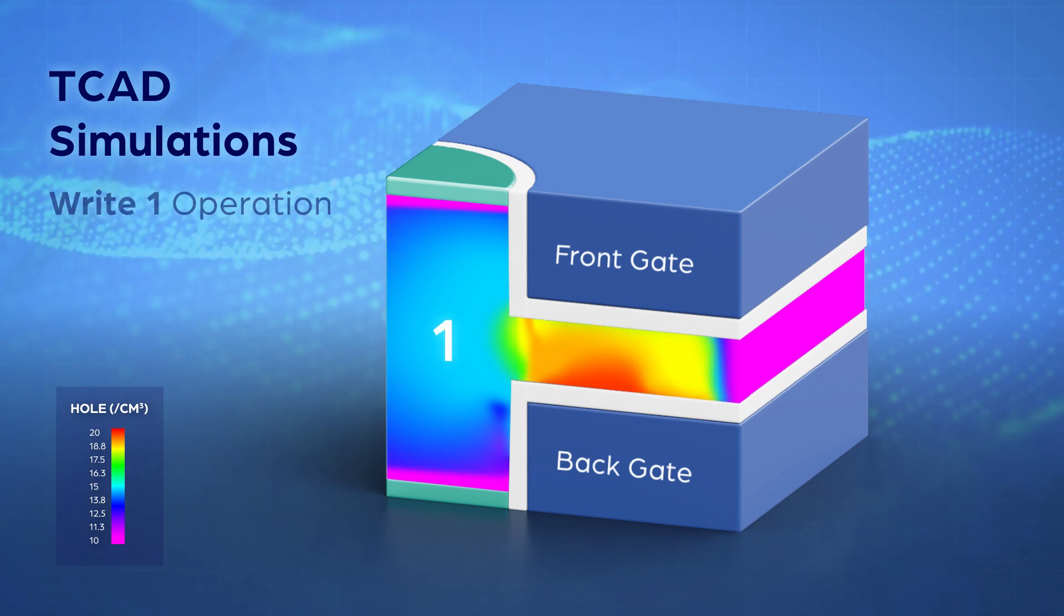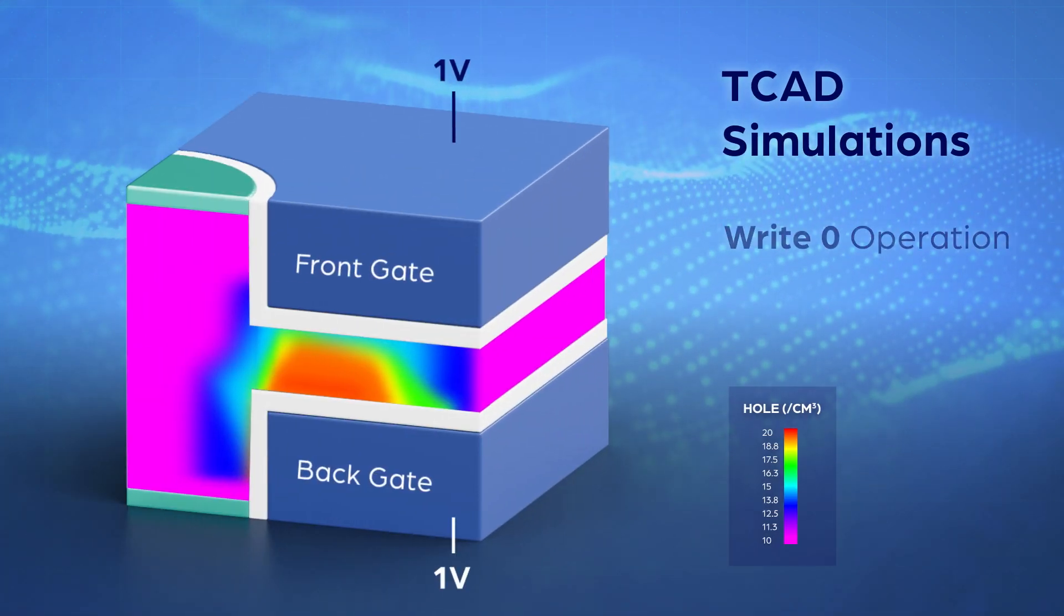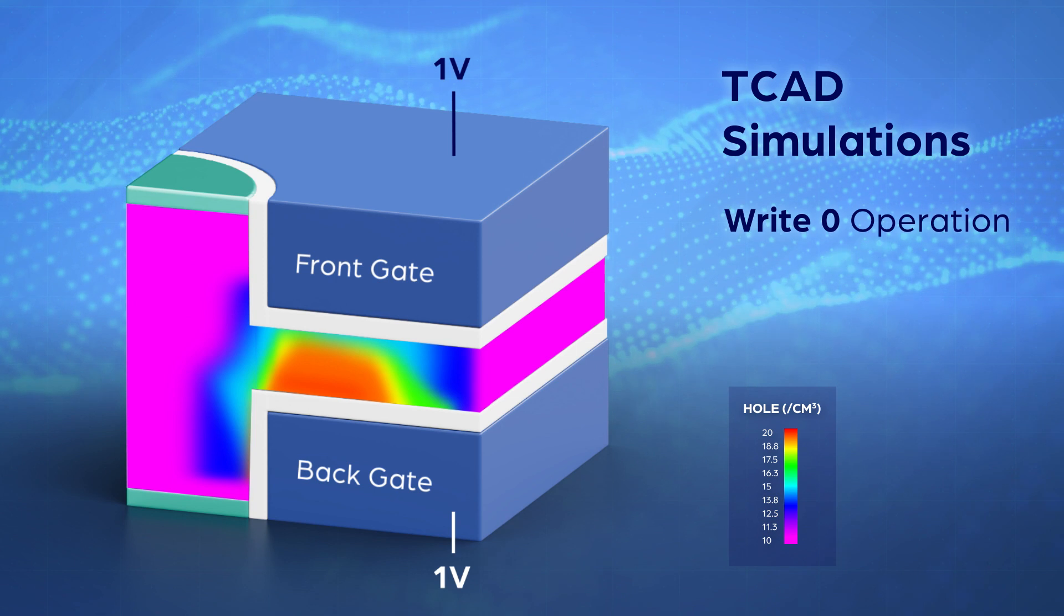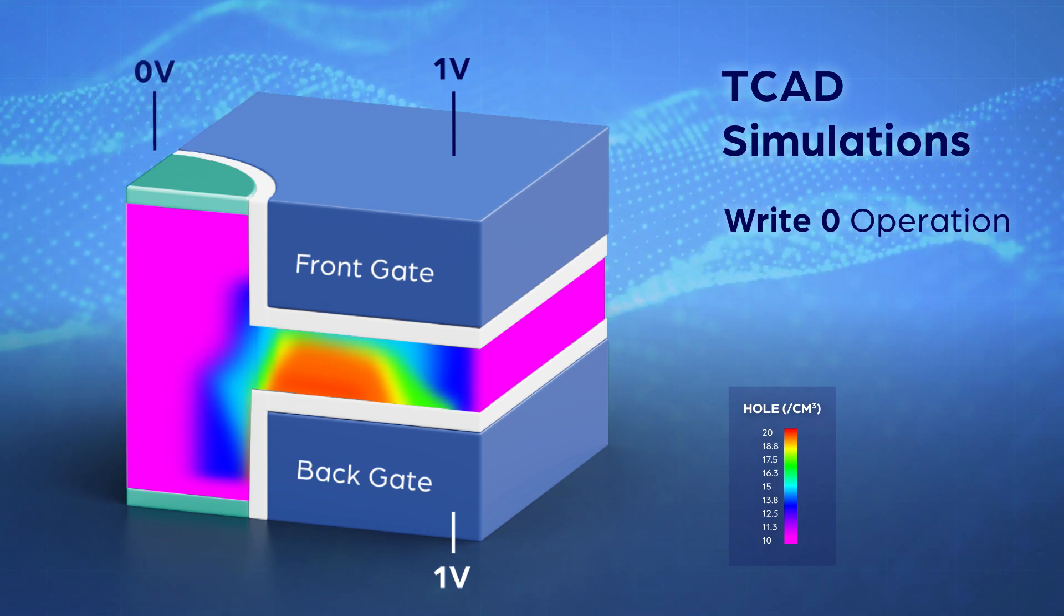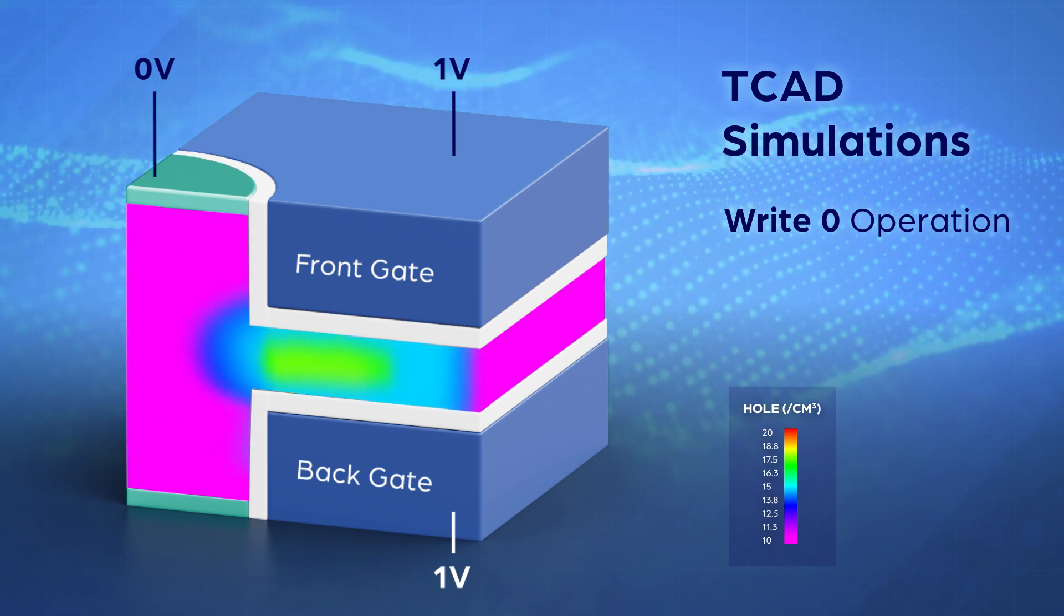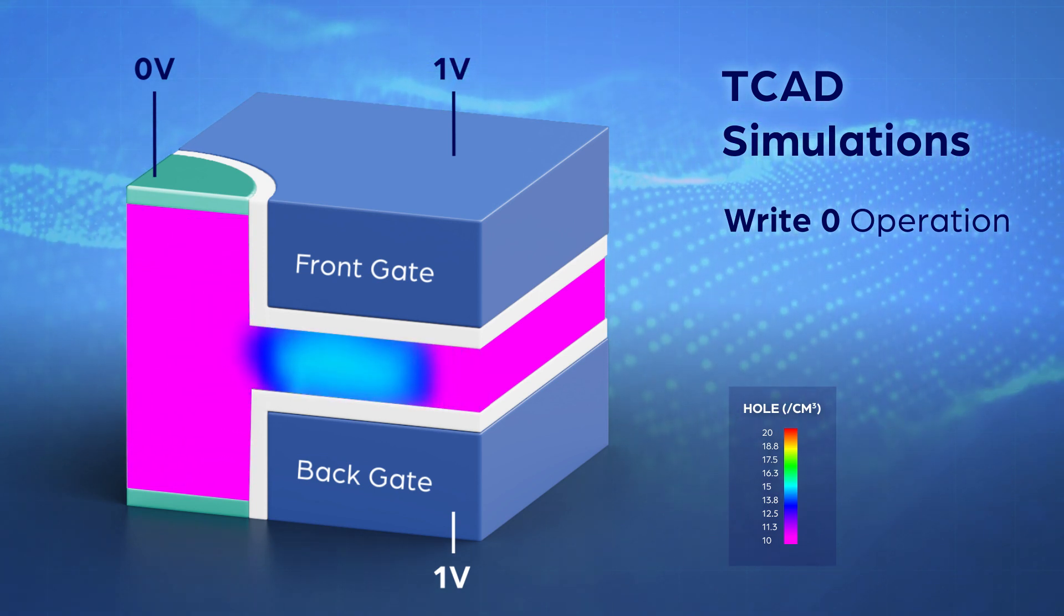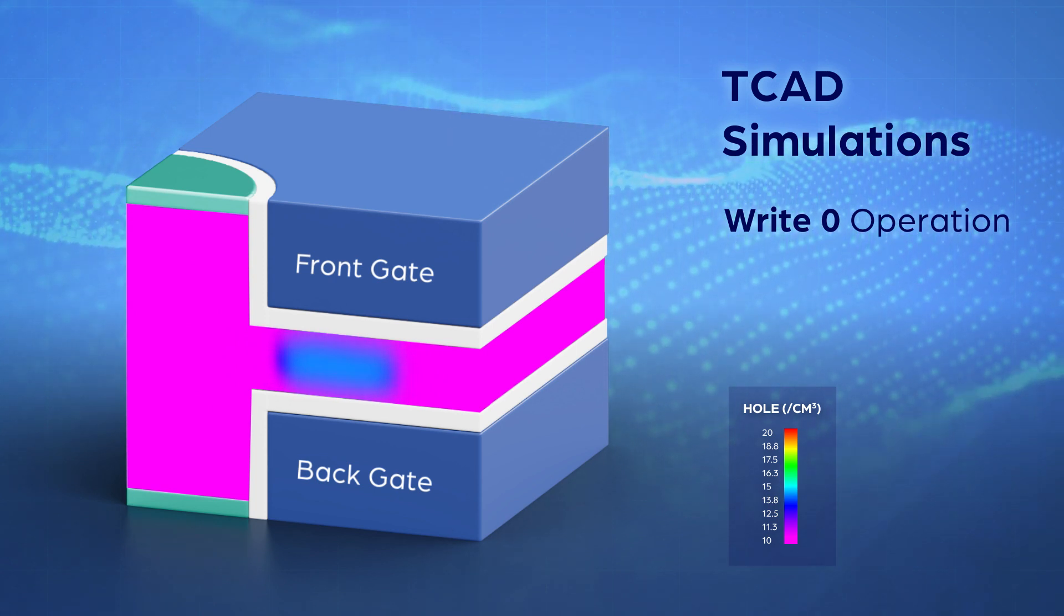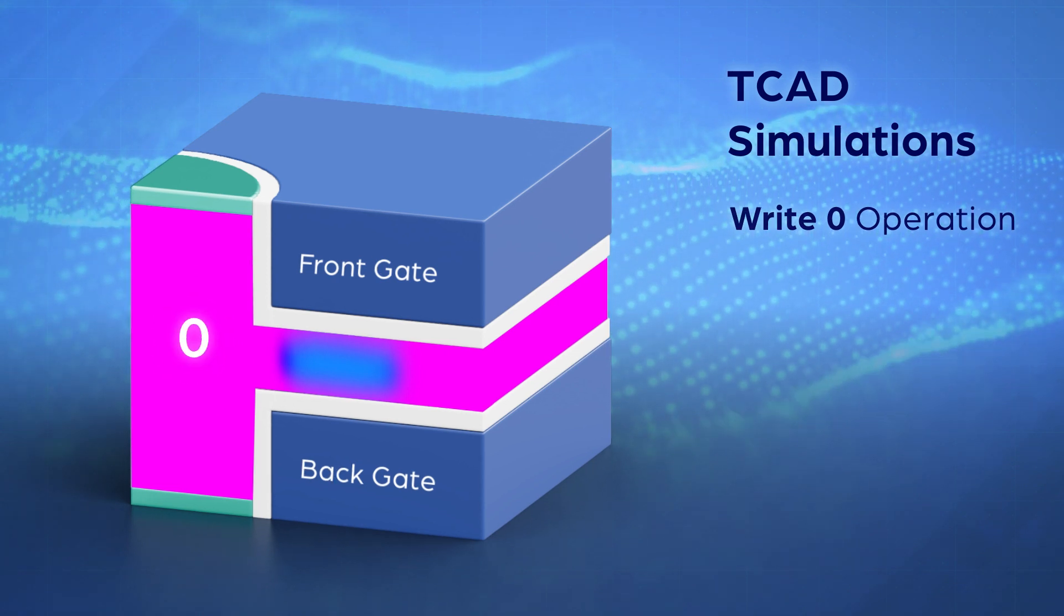To write data 0, the front gate and back gate are applied with 1V to couple up the floating body potential, and the bit line is applied with 0V. This creates a forward bias current to extract electric holes from the floating body into the bit line in 1 nanosecond, reducing the body potential and the cell's read current. This state represents data 0.